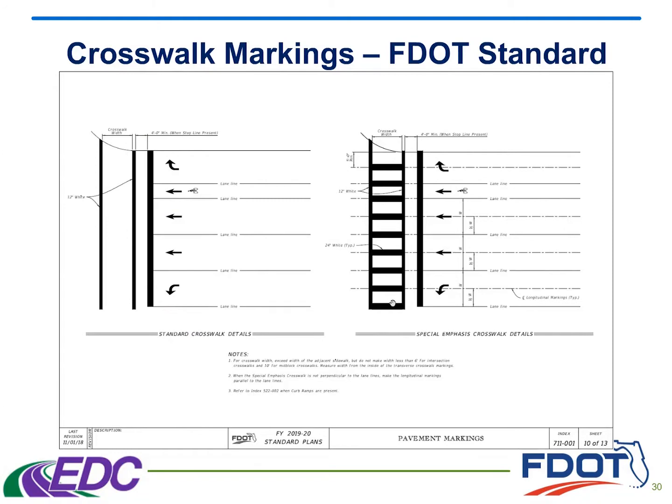The DOT criteria uses special emphasis markings for signalized intersections, roundabouts, and mid-block crosswalks. However, we use the standard markings for stop or yield controlled intersections. This is a graphic of standard plans index 711-001, which shows the construction details for both the standard crosswalk markings and the special emphasis markings.